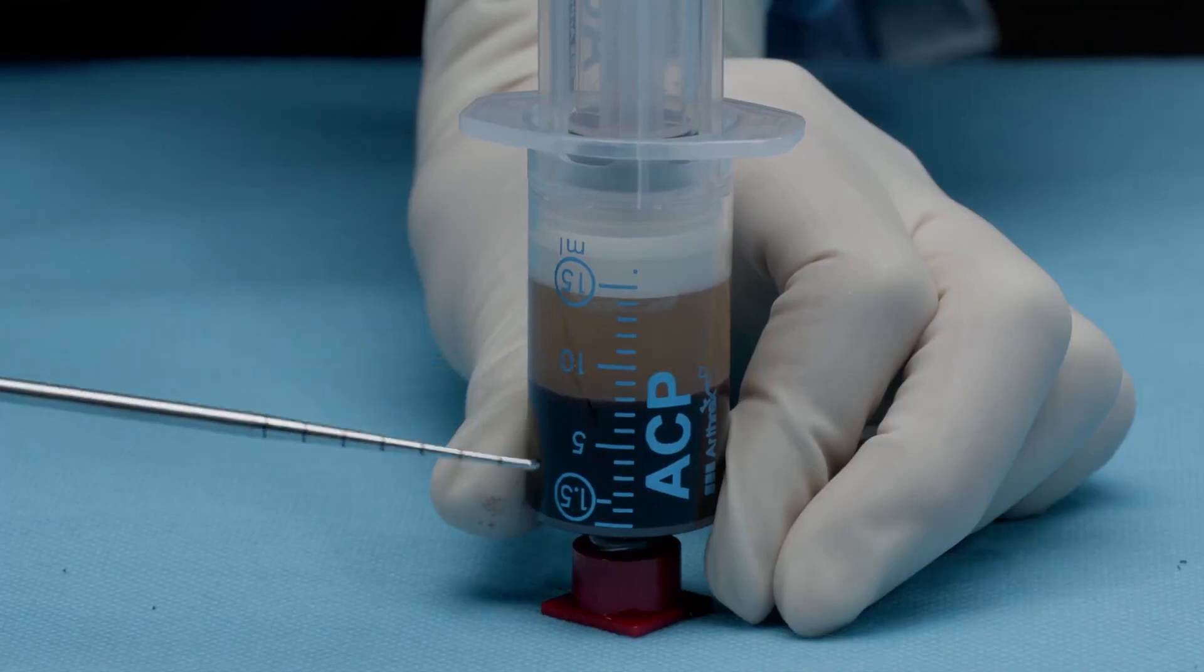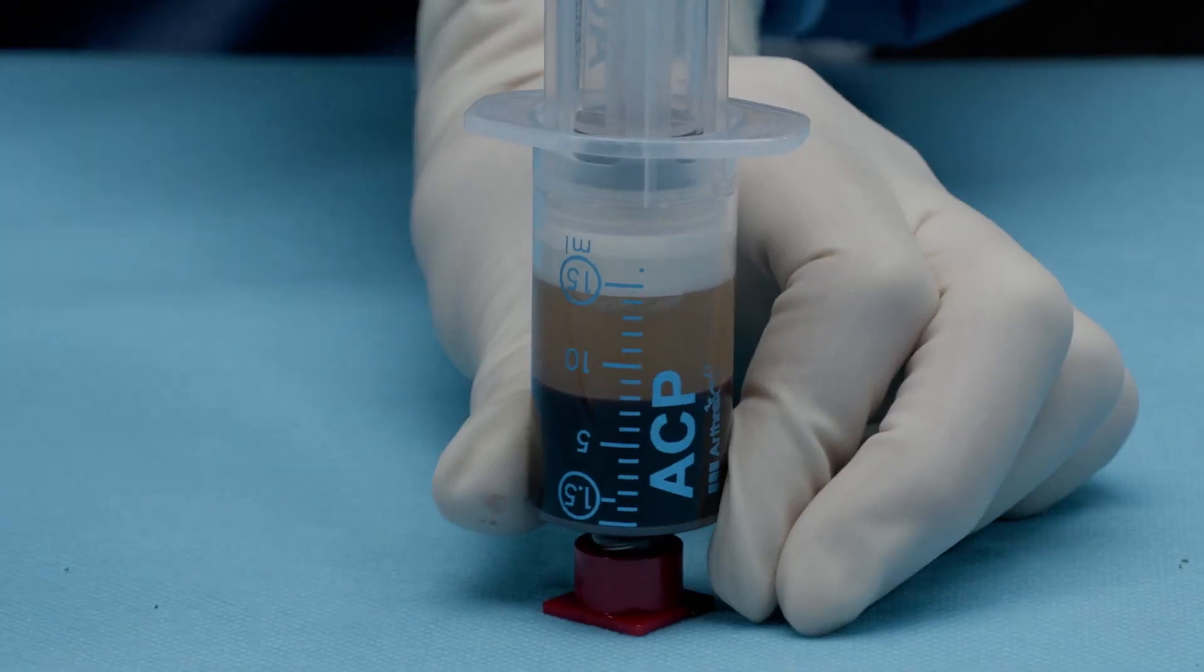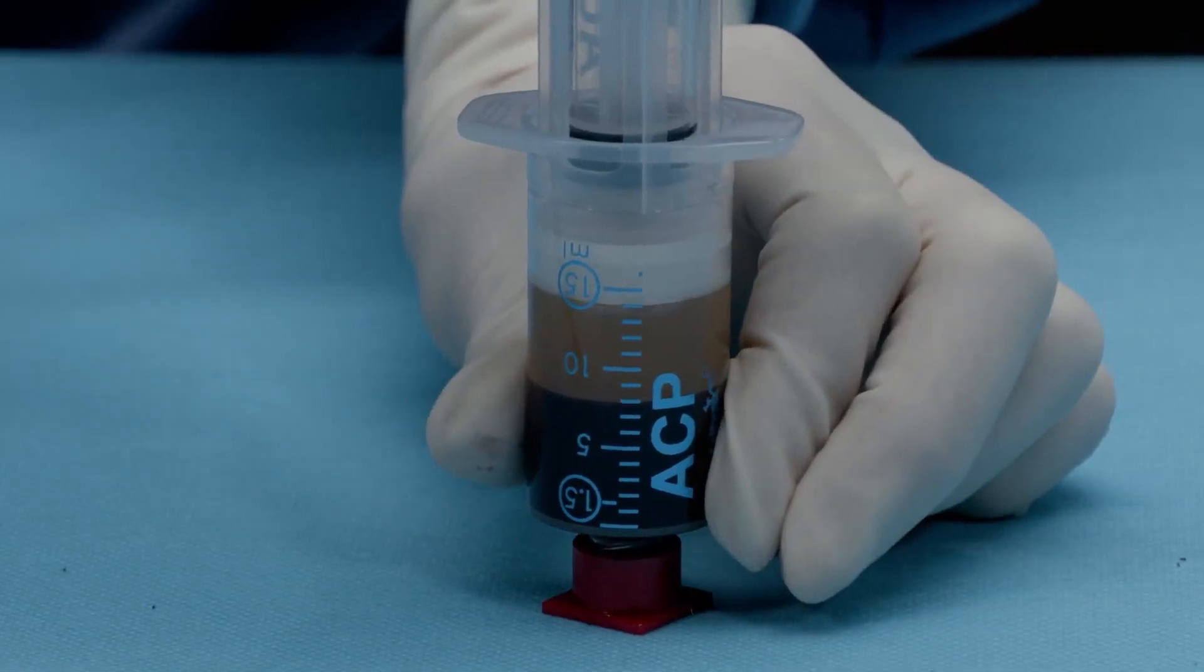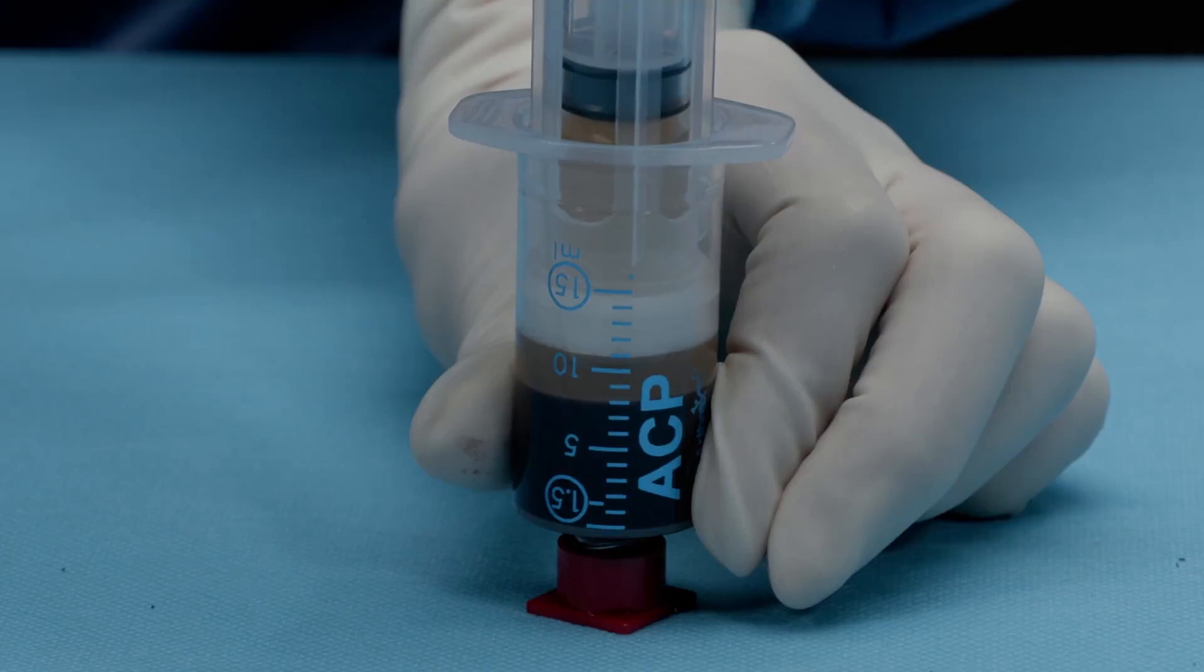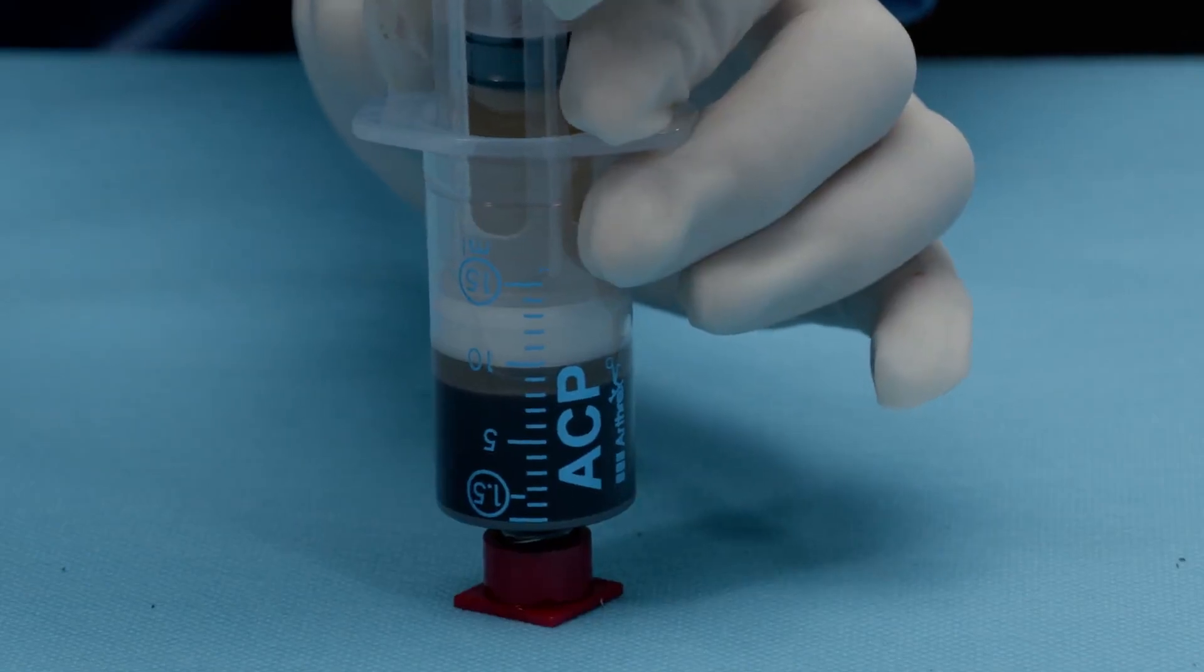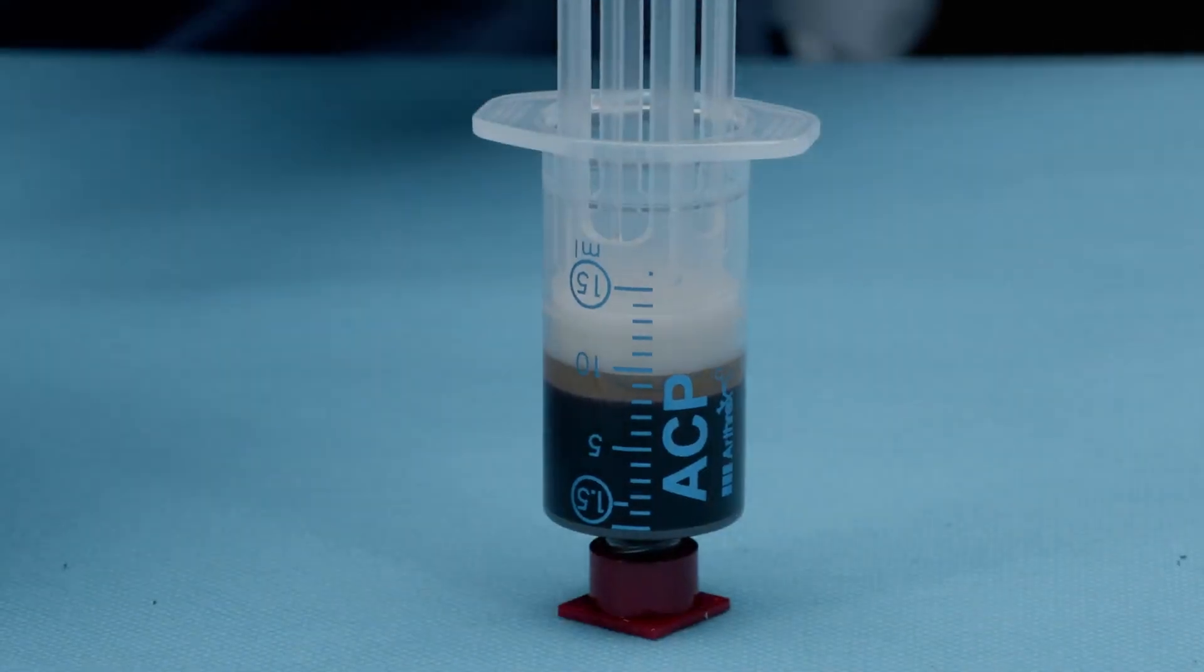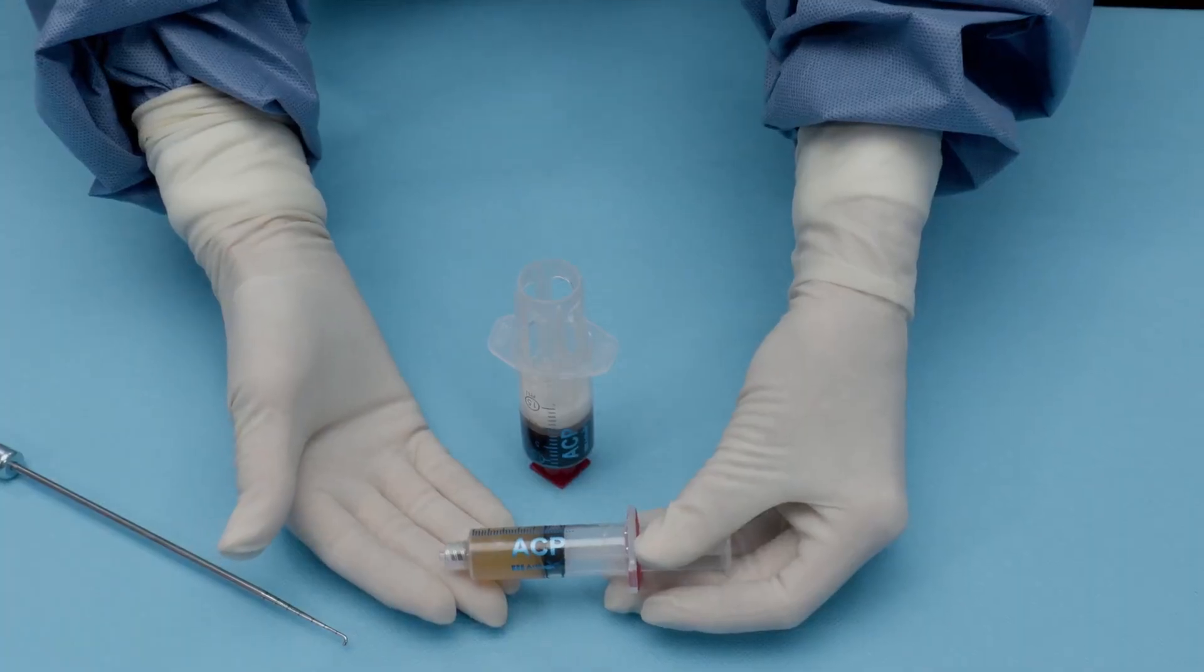After our second spin, in our ACP double barrel syringe, you're going to see your PRP product separate nicely from your red blood cell layer. At this time, you're ready to withdraw your final product. You're going to hold the base firmly, and you're going to pull off your PRP product without pulling up any of the RBC layer. So you're going to stop right above that RBC layer. You're then going to hold the barrel, unscrew your syringe, and then you have your final PRP product for use.